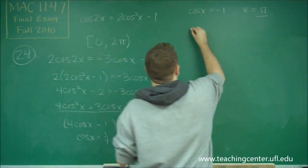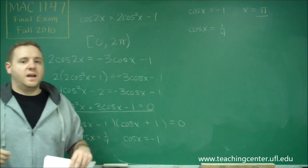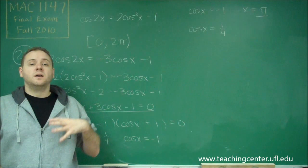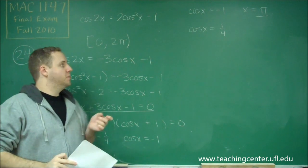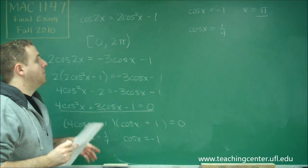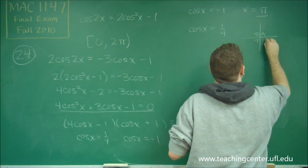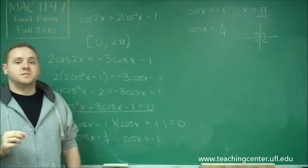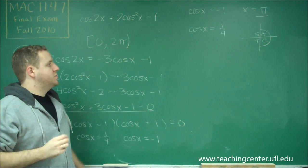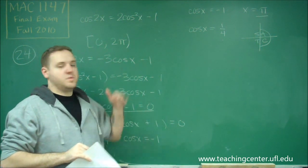Now we have our other equation: cosine of x equals 1/4. The tricky part is that 1/4 is not one of your common ratios, so this is not going to be π/6, π/3, π/2, or any of the familiar angles. We're just going to have to write this using arc cosine. Where is cosine positive? Looking at the quadrants, cosine is positive in quadrant 1 and quadrant 4, so this should have two answers — one in each quadrant.